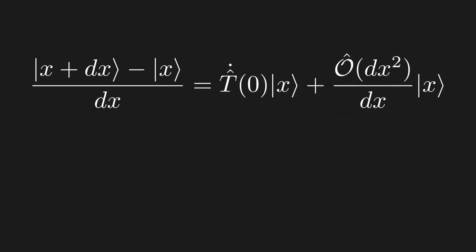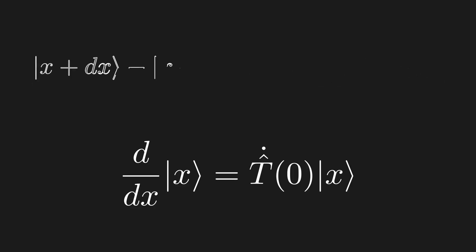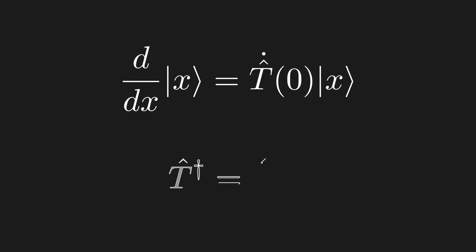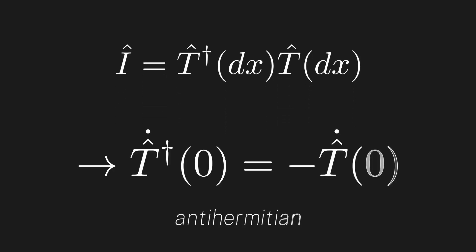After moving things around and dividing by dx, then taking dx to zero, we have the definition of the derivative on the left and the higher order terms vanish, giving us the following equation. This is exactly what we did in more detail last episode. Now this still doesn't look like much, but we haven't yet input the information that T is unitary. Just like for the time evolution operator, this is done by applying the unitary condition over a tiny displacement dx, and Taylor expanding both operators. This allows us to conclude that the derivative of T is anti-Hermitian.